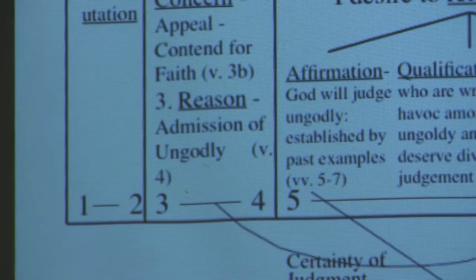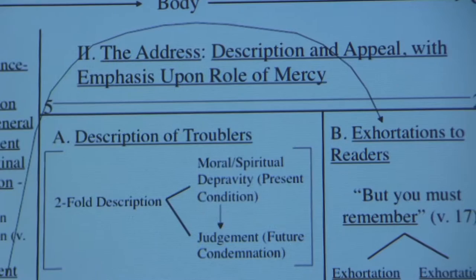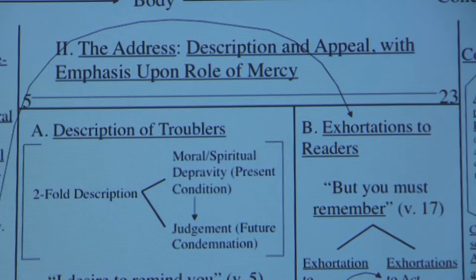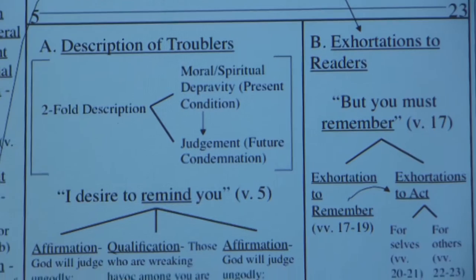At the end of the body, in verses 17 through 23, you have the specifics of the appeal to contend for the faith once for all delivered to the saints. We're going to come back to this, but you'll be able to see that you have an arrangement of chiasm here.